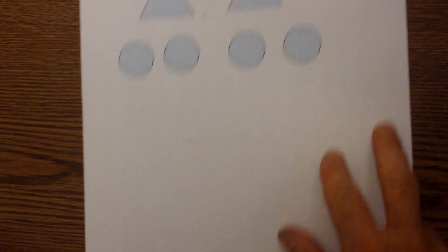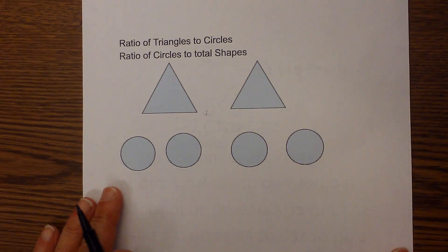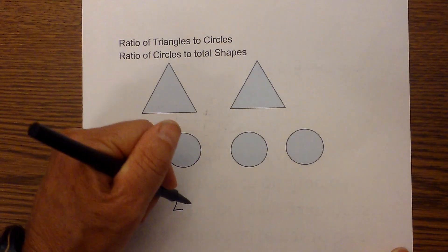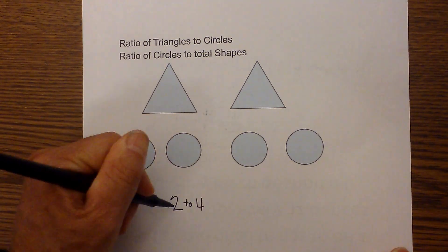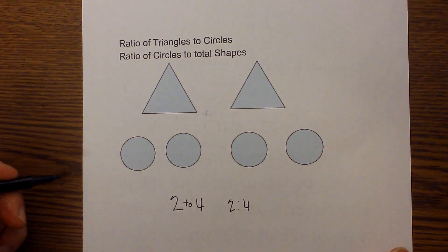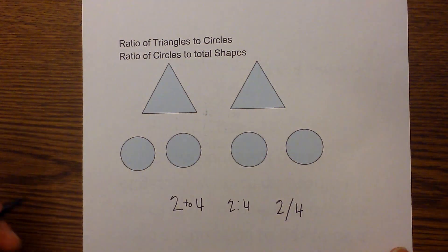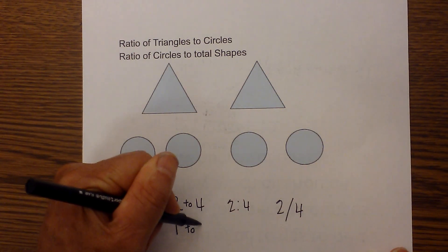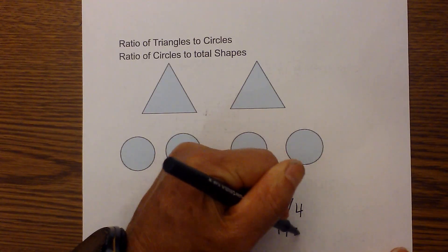Let's look at a couple of shapes. We want to know the ratio of triangles to circles. There are two triangles and four circles, so it would be two to four. We could write it with a colon or as a fraction, and then reduce to one to two.